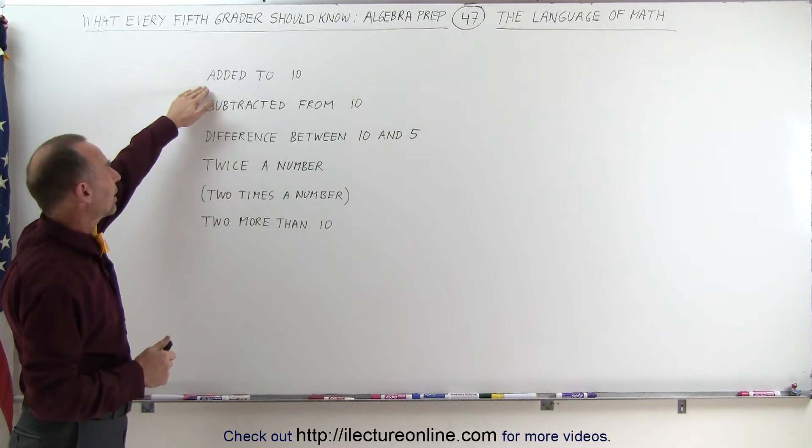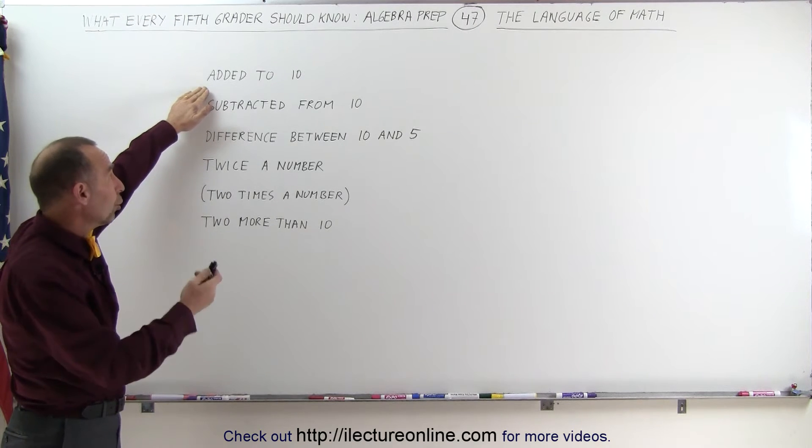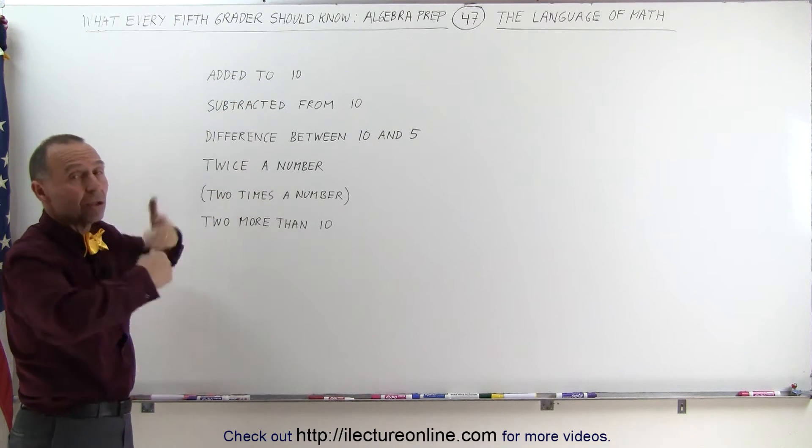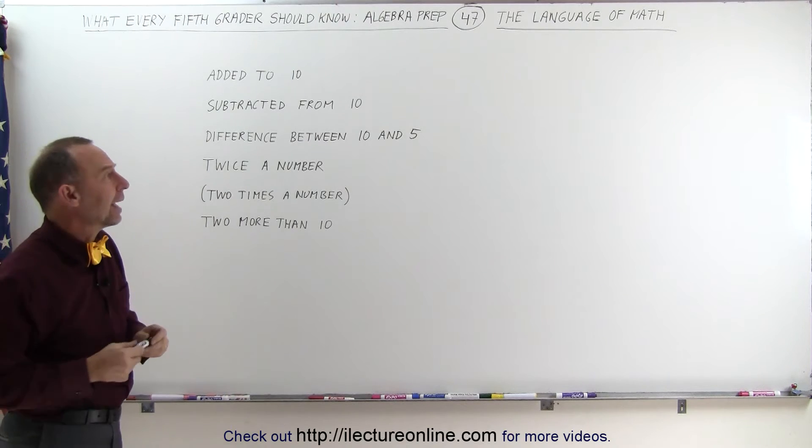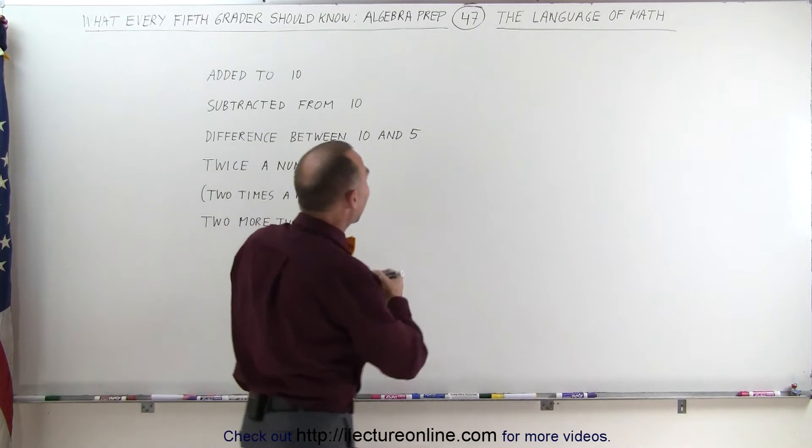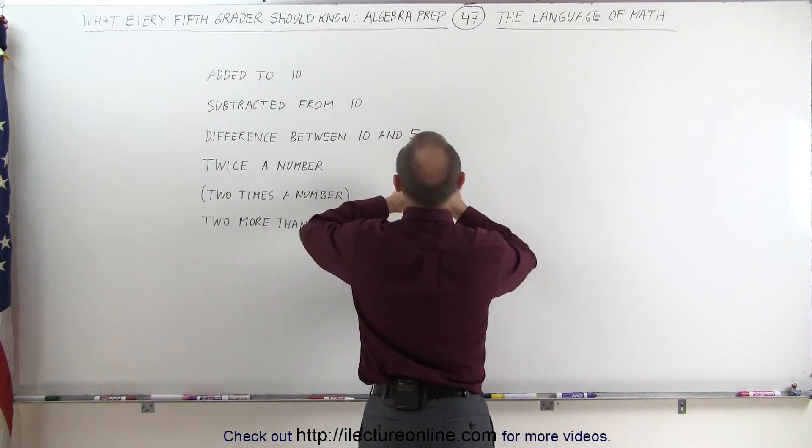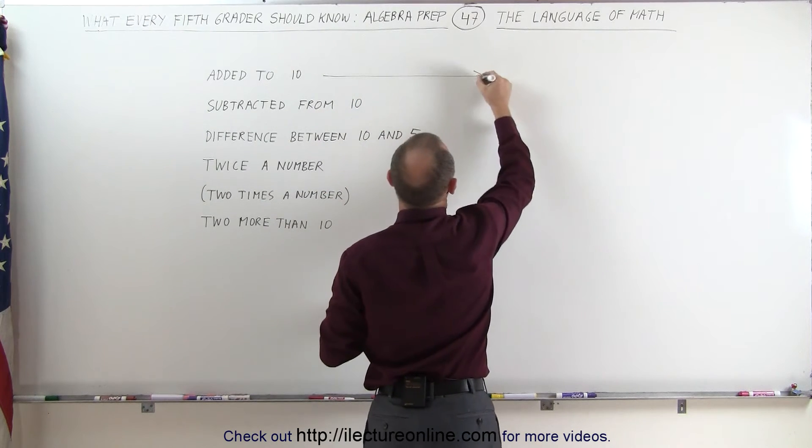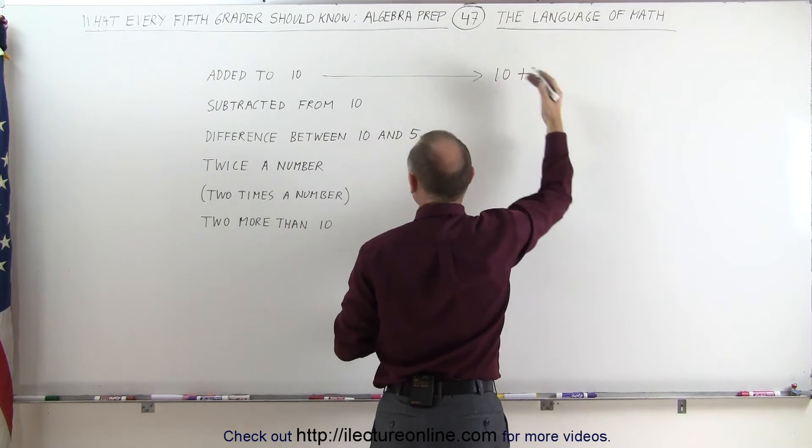When we see something that says added to a number, it could be an unknown number or a known number, let's say the number 10. How do you write that? Well, added to means you're going to add something to that number, therefore you write 10 plus whatever you're adding to that.